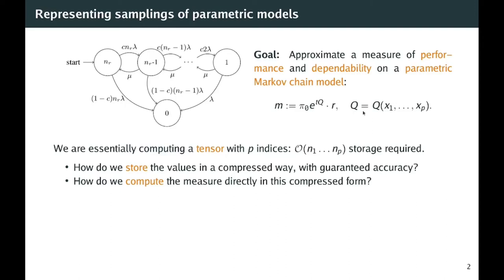In practice, we'd like to sample the parameter space by discretizing each parameter with ni values. And if you do that, you're basically computing a tensor with b indices whose storage is exponential in b, so that can be very expensive quickly.